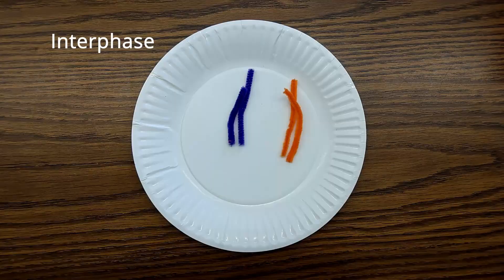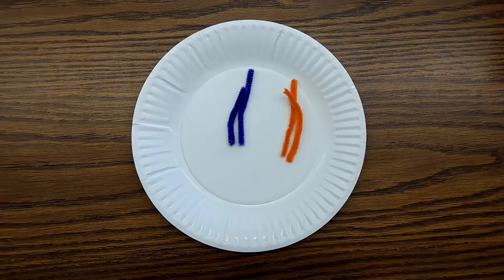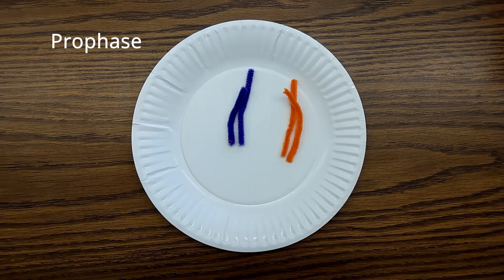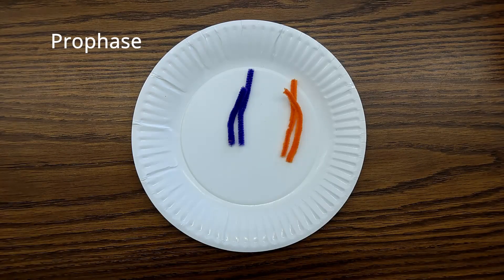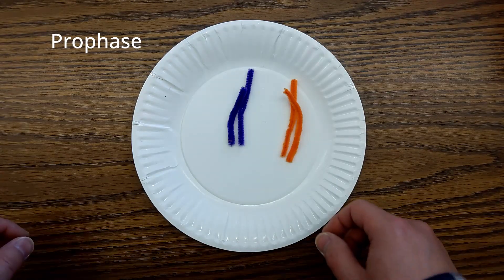The next step, the first phase of mitosis, is called prophase. In this phase, the nuclear membrane begins to disappear and the DNA condenses into duplicated chromosomes resulting in the distinct X shape.